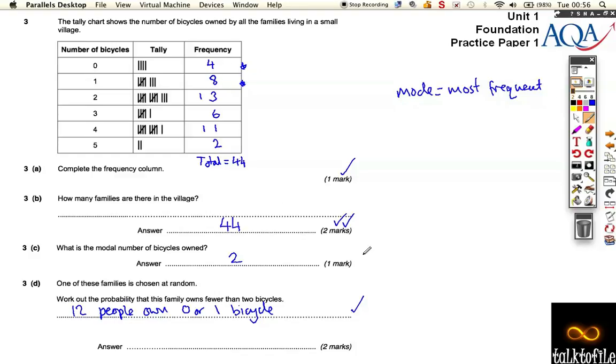and you get one mark for that, I forgot to mark the one before, you get one mark for getting the 12, but it's a probability, so you need to do it at 12 out of the 44 families, and that is a probability, and it doesn't say we can leave our answer like that.